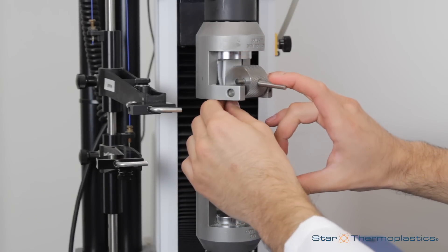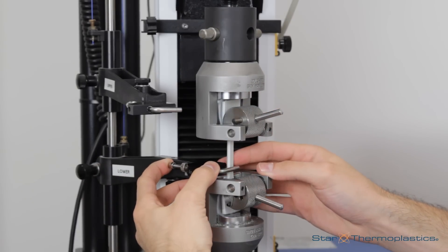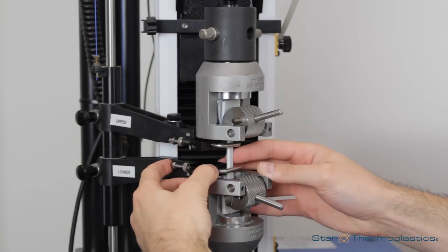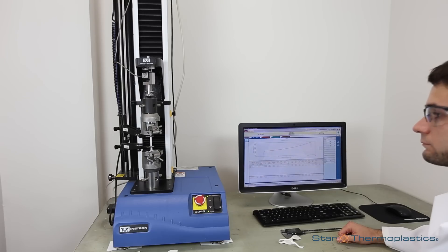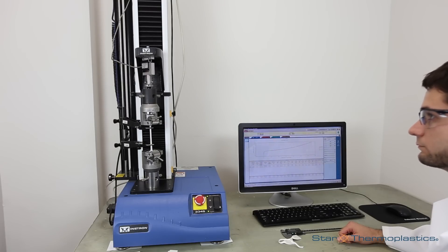The test material is secured in place with grippers, and then we initiate the test. We will set the test in motion, and as you can see, the grippers slowly begin to separate and pull the test material apart.